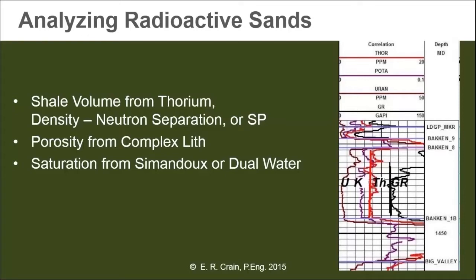Traditionally, if we were going to analyze a radioactive sand, we would hope for a thorium curve. Unfortunately, they're kind of rare. We would use the thorium curve just like a gamma ray log — pick a clean line, pick a shale line, and calculate the shale volume. We can also get the shale volume from density-neutron separation.